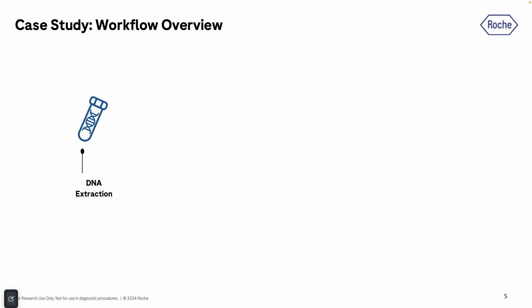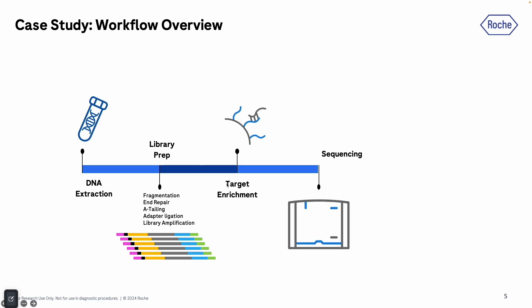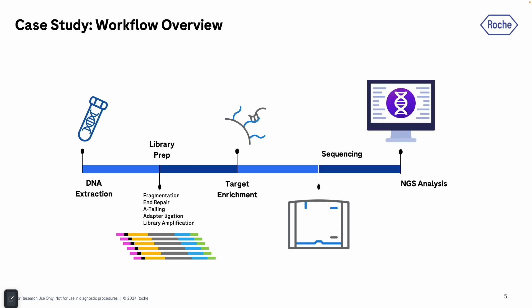For the target enrichment workflow, we start with DNA extraction and then library preparation, which involves a series of steps: fragmentation and repair, A-tailing, adapter ligation, and library amplification. After that, we perform target enrichment, and then these libraries are sequenced using a sequencer. Post-sequencing, we analyze the data generated using open-source tools.